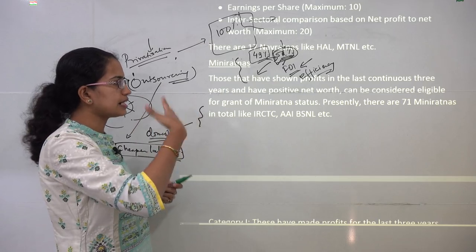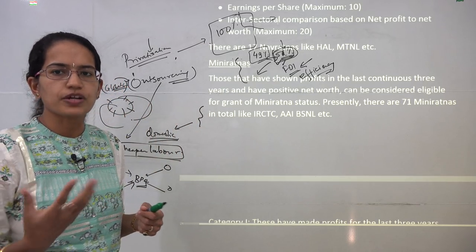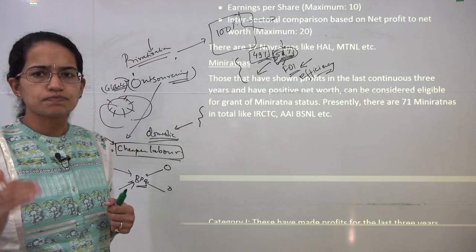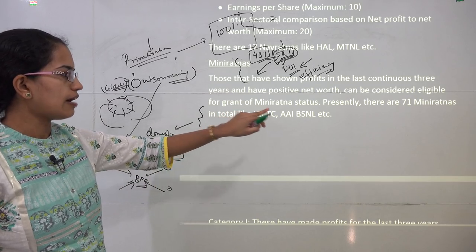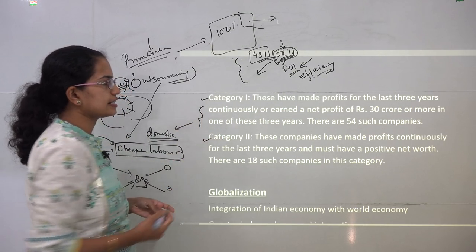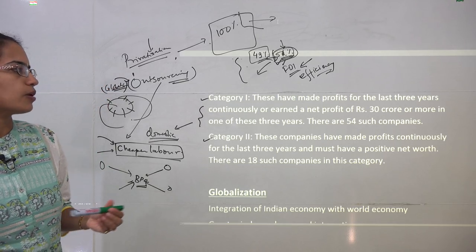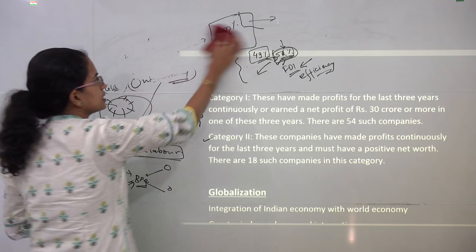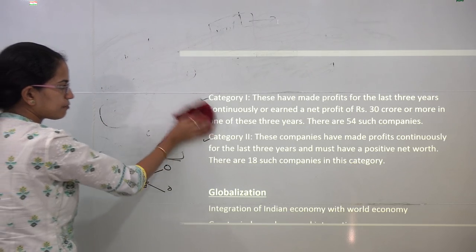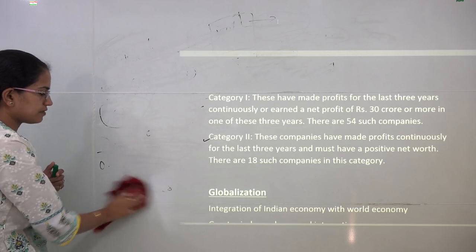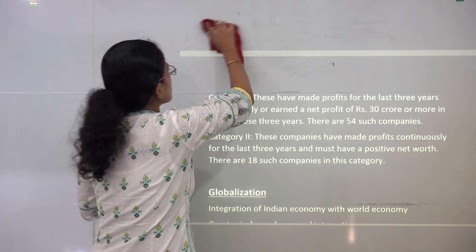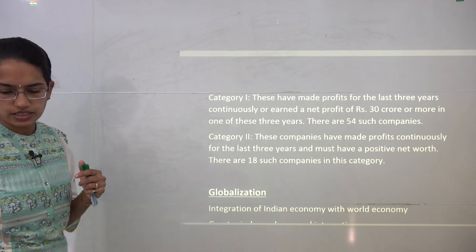Under Miniratna, companies must have shown profit for the last three years with a positive net worth. There are more than 71 Miniratna companies, like IRCTC, Airports Authority of India, and BSNL. Miniratna has two categories: Category 1 includes companies with profit for the last three years continuously with net profit of more than ₹30 crores; Category 2 includes companies with profit for three years with a positive net worth.